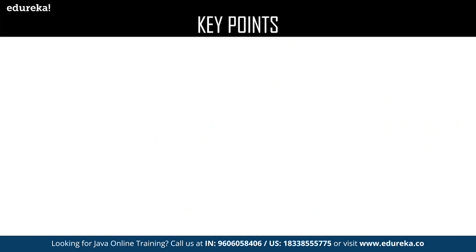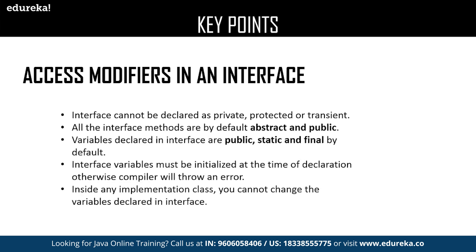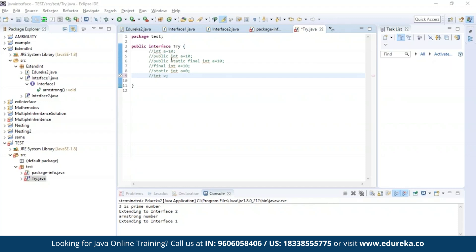Let us continue with our key points. The next one is access modifiers in an interface — interface can be declared as private, protected, and transient. All interface methods by default are abstract and public. Variables declared in an interface are public, static, and final by default. Interface variables must be initialized at the time of declaration; otherwise the compiler will throw an error. Inside any implementation class, you cannot change the variables declared in an interface.